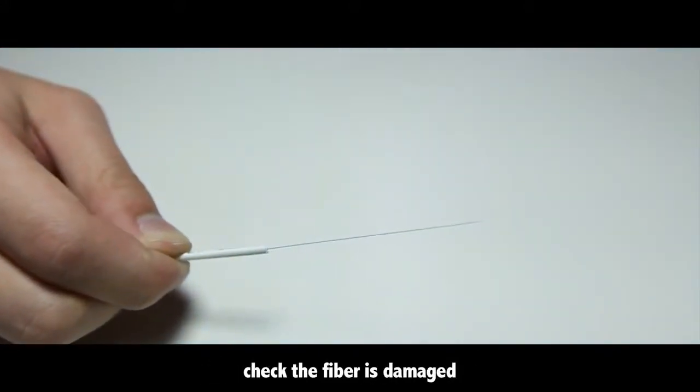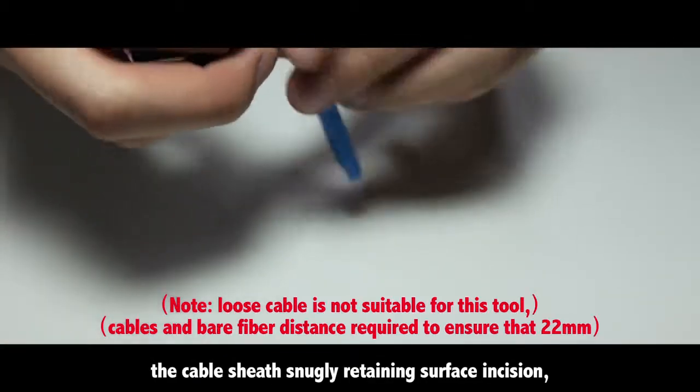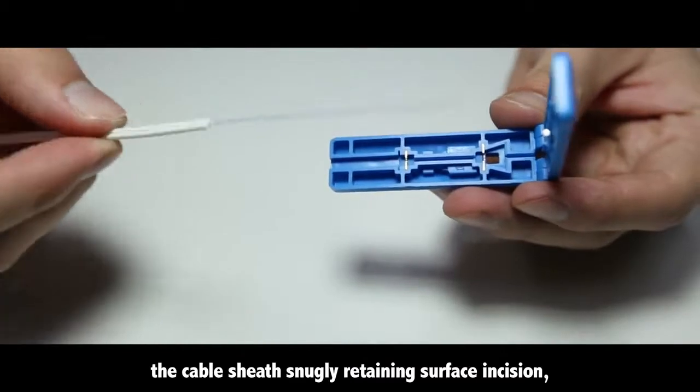Check that the fiber is not damaged. The cable sheath should be snugly retained at the surface incision.